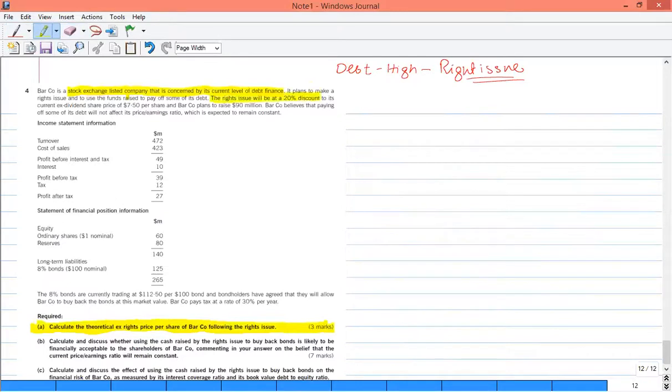20% discount to the current market price of 7.5. How are the plans? The fund raise to 90 million. The company believes that paying off some of its debt will not affect its price to earning ratio, which remains the same. How do we get the price to earning ratio? Price to earning ratio is a formula: share price divided by EPS. How do we get the EPS? Profit after tax divided by the number of shares.